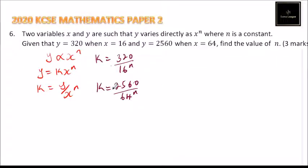Now we have k expressed in two ways, so we can equate that and say 320 divided by 16 to power n is equal to 2560 divided by 64 to power n, which we can cross multiply and say 64 to power n divided by 16 to power n is equal to 2560 divided by 320.